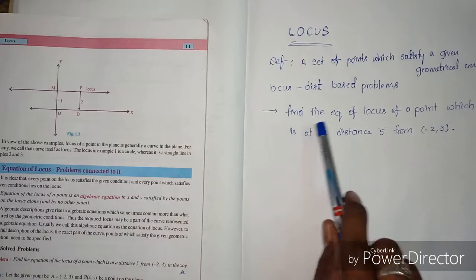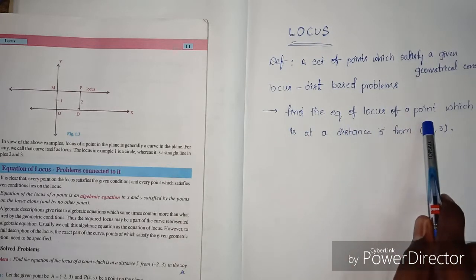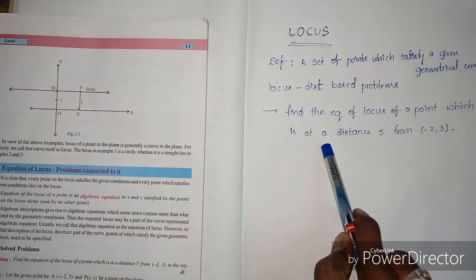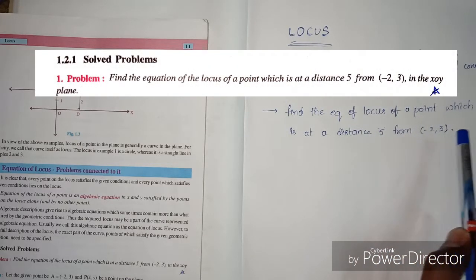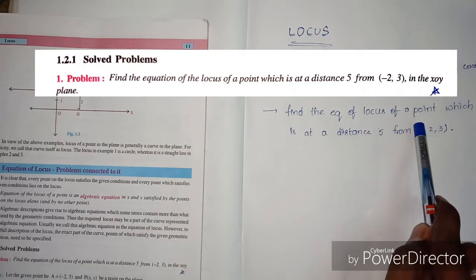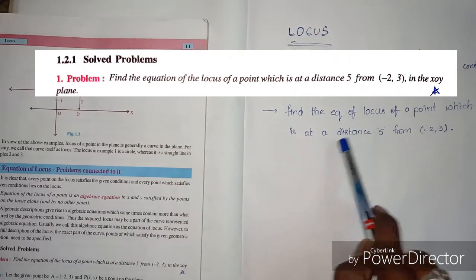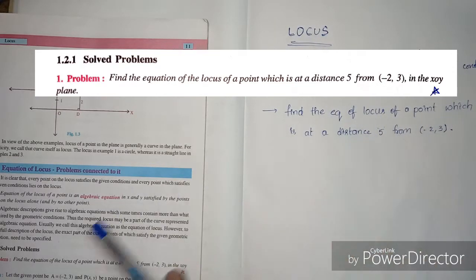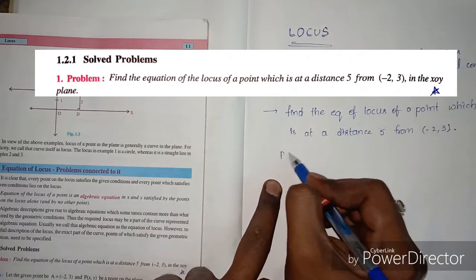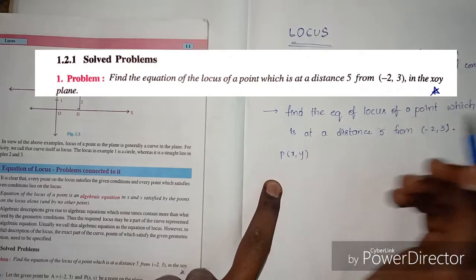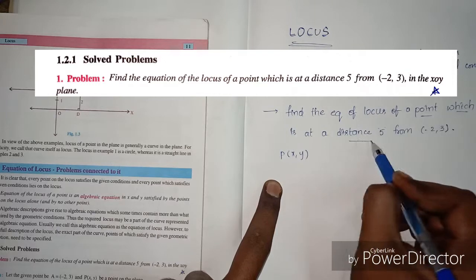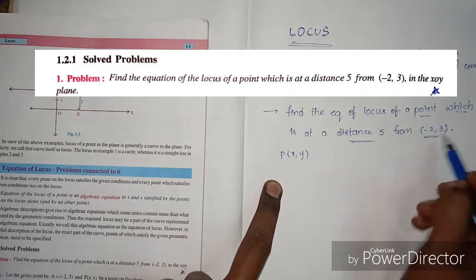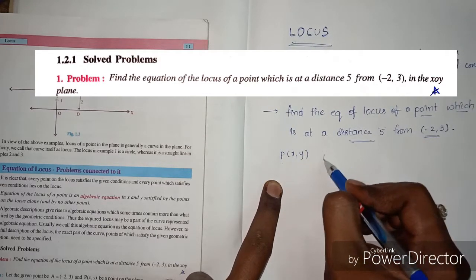Now, what is the point? The problem is: find the equation of the locus of a point which is at a distance of 5 from (-2, 3). So I am going to take point P(x, y). We don't know what the point is — the point which is at a distance of 5 from (-2, 3).